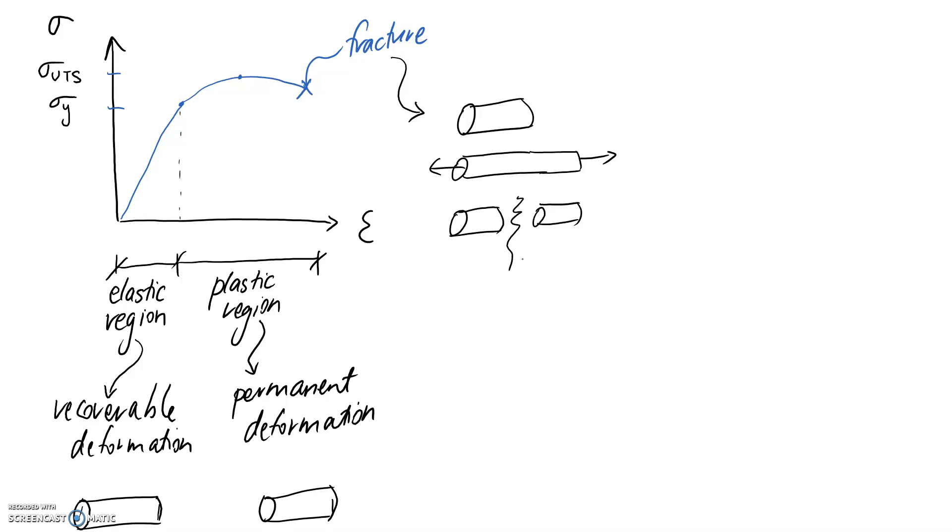I think that's pretty much it for explaining the curve. So the only other property of interest on this curve for the moment is going to be the Young's modulus, and this is defined as the gradient through the elastic region of the curve.